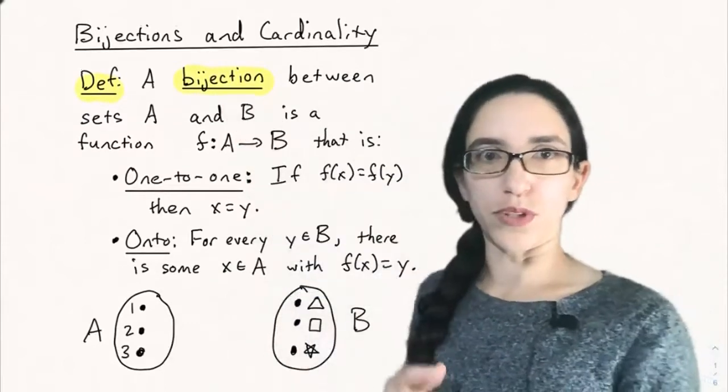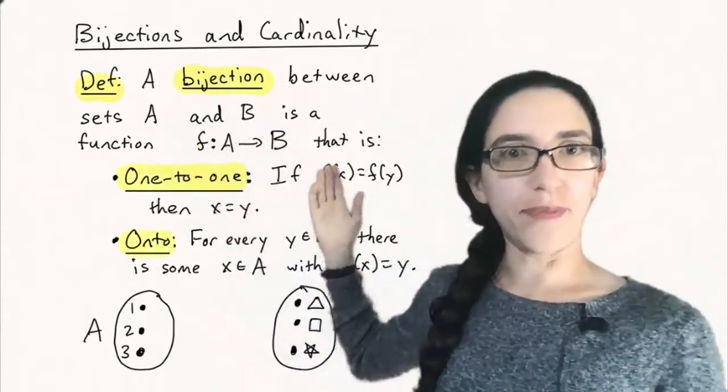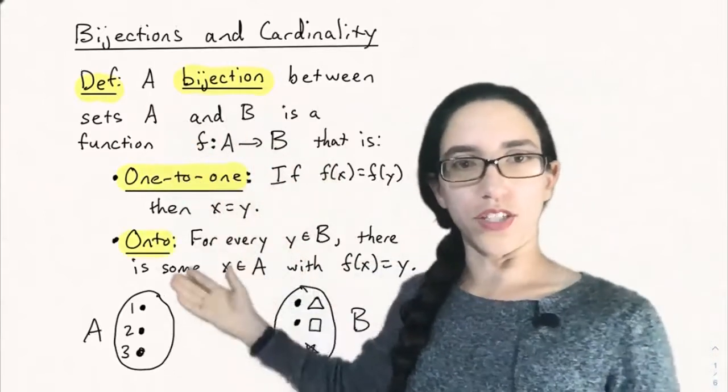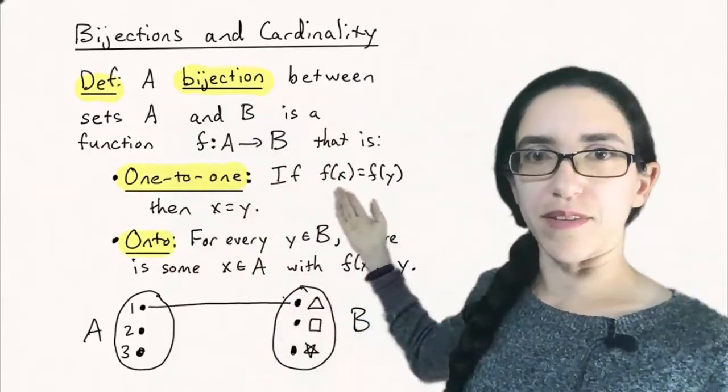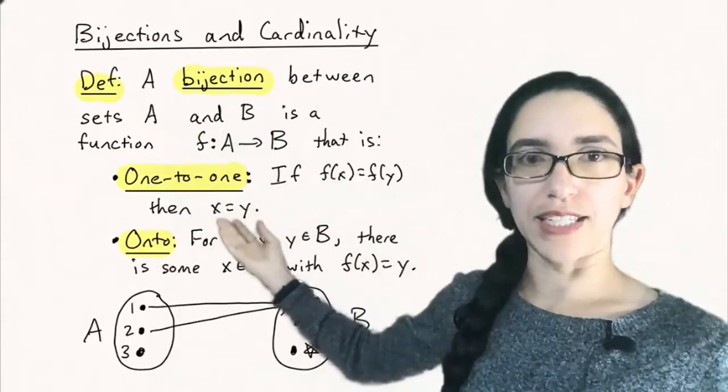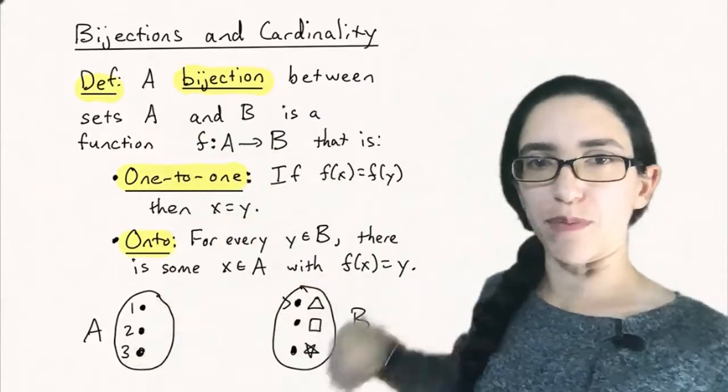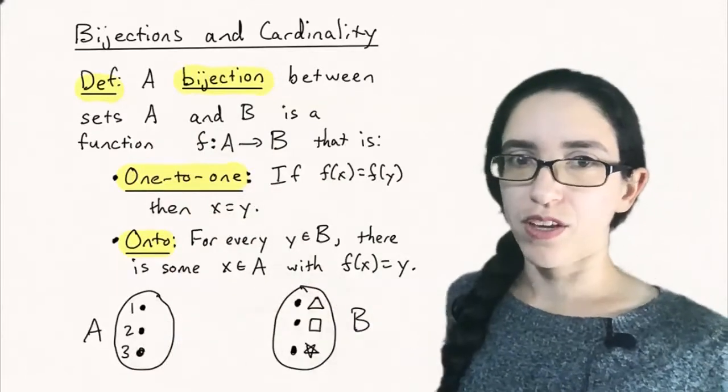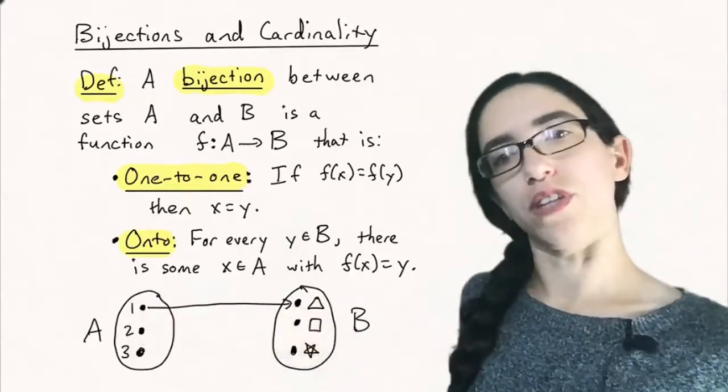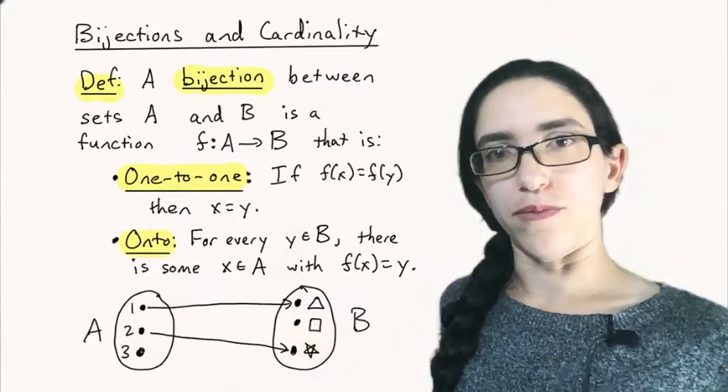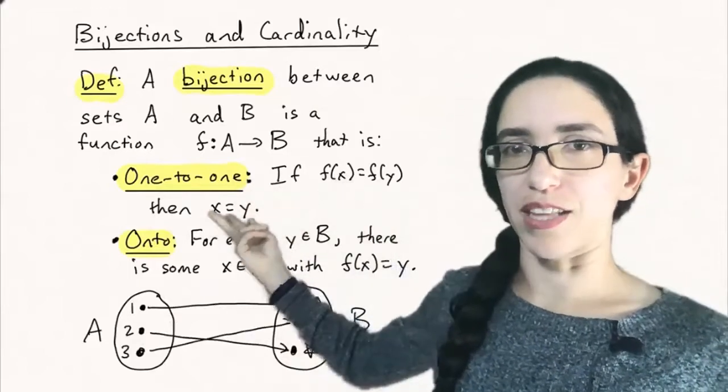So a bijection, let's recall, between sets A and B is a function from A to B that is one-to-one and onto. One-to-one means that if f(x) equals f(y) then x actually equals y, which means you can't have two different points in A mapping to the same point of B. That's not allowed. So if you have two different points here they have to go to different points over in B, and that's encoded by this statement because if they did go to the same place actually they must have been the same.